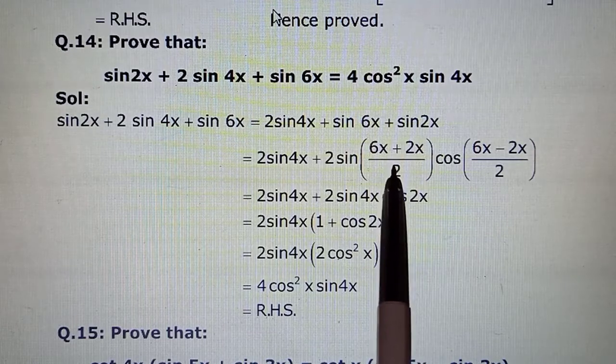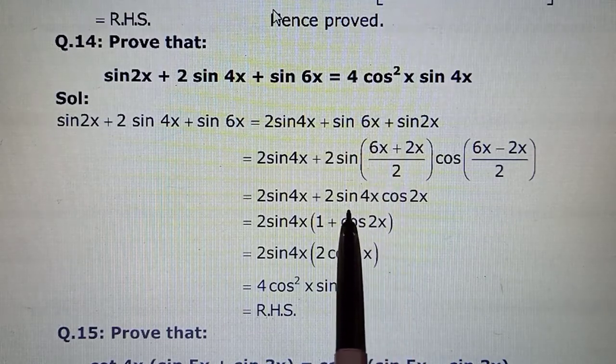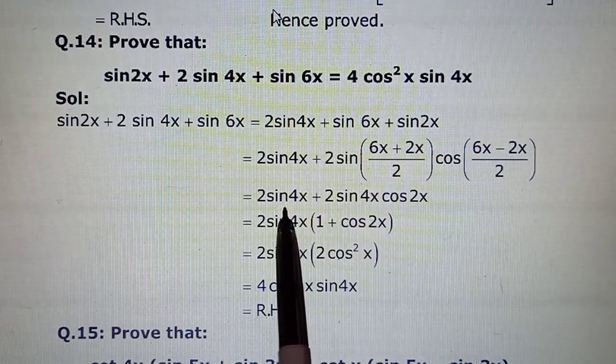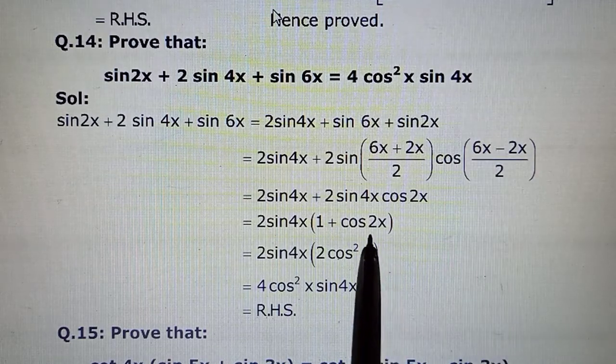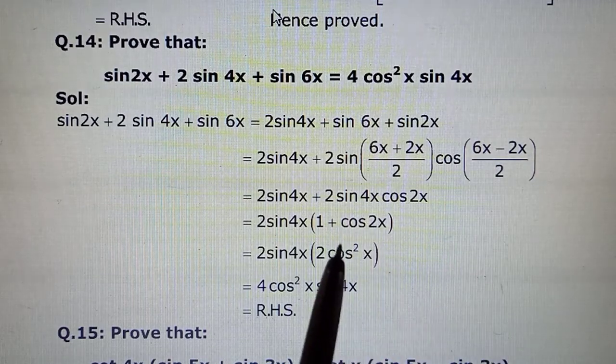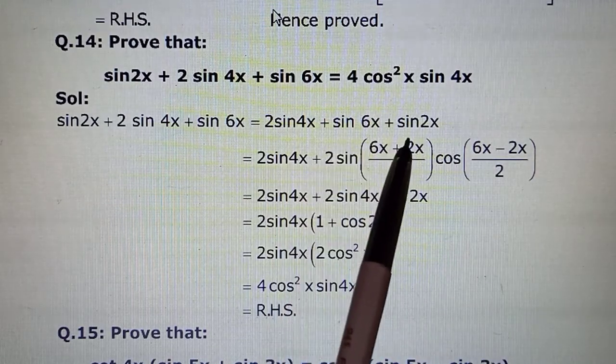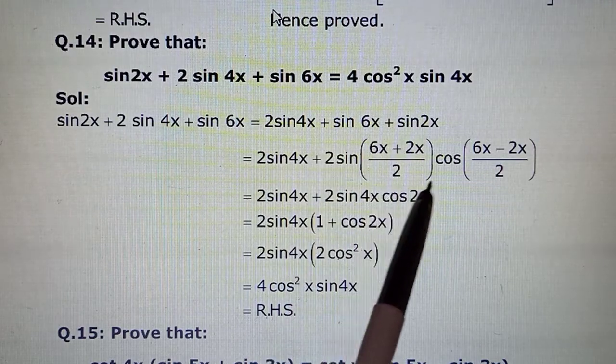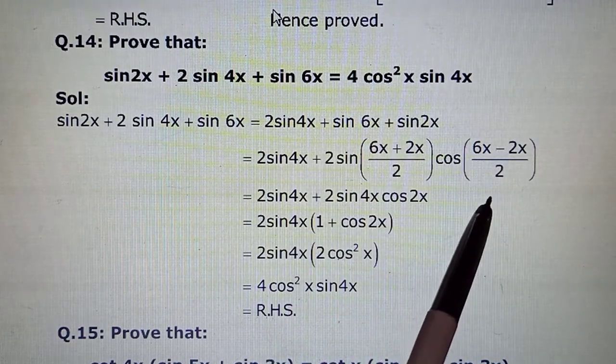So that is how you have to work it out. We have applied sin C + sin D which gives us 2 sin, sum of the angles by 2, and cos of the difference of the angles by 2.